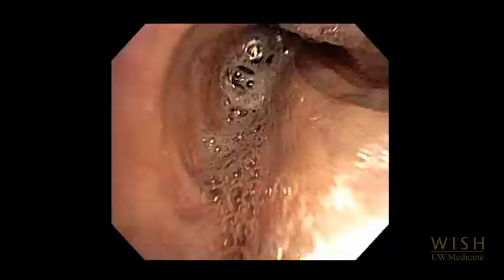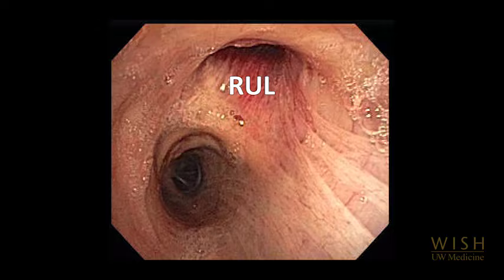After completing full inspection of one lung, return to the main carina to begin inspection of the other. The bronchoscope is entering the right main stem. The distance from the main carina to the right upper lobe bronchus is shorter than from the main carina to the left upper lobe bronchus.